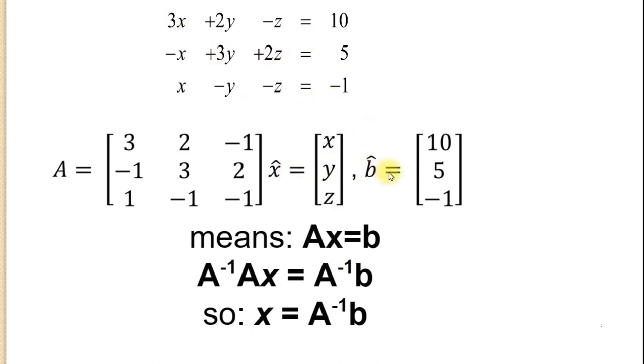And then another vector, b hat, is going to contain basically the constant terms. What's on the right side of the equal sign here? And you should convince yourself, and I'm going to try and help convince you right now, that if we multiply, matrix multiply, A times x and set that equal to b, we basically have this system of equations.